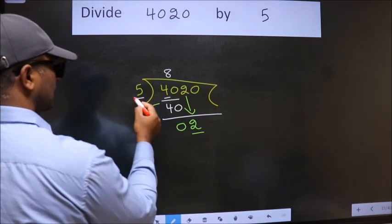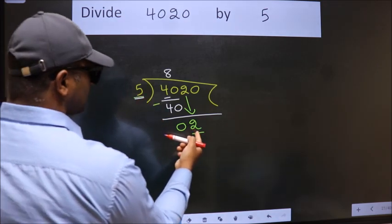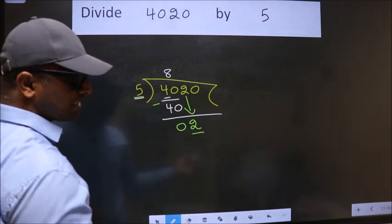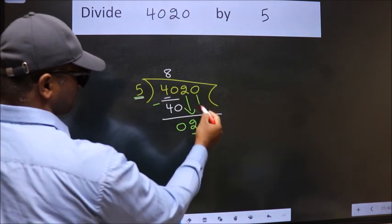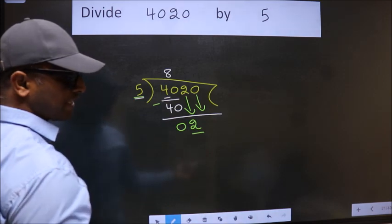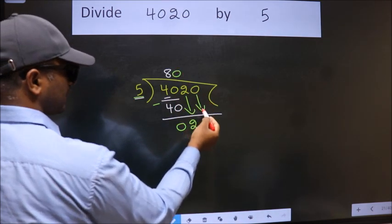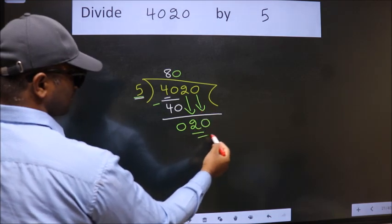Now, here we have 2. Here 5. 2 is smaller than 5. So we should bring down the second number. And the rule to bring down second number is put 0 here. Then only we can bring down this number. So, 20.